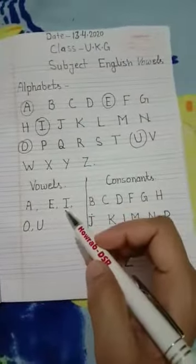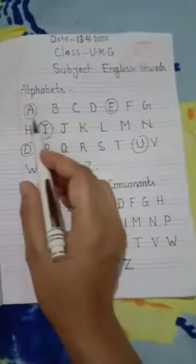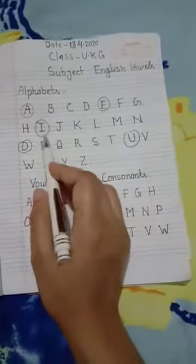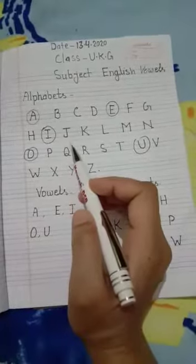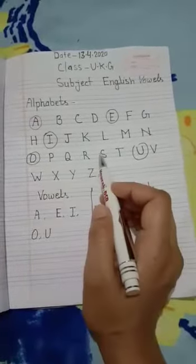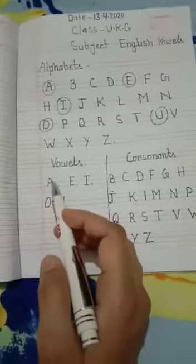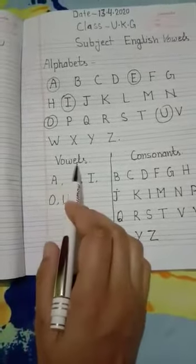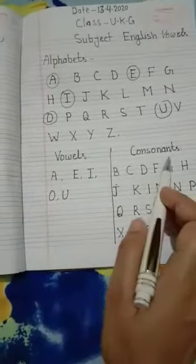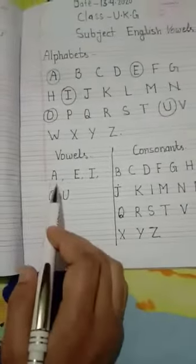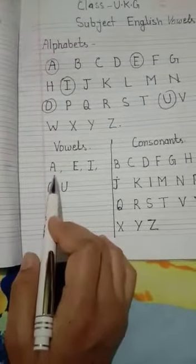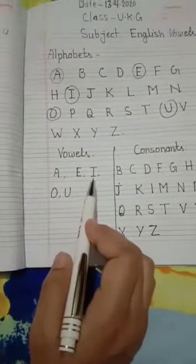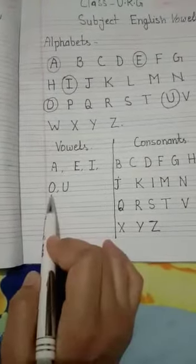Now I will sort out vowels. A, E, I, O, U. There are 5 vowels and 21 letters of consonants. Write here two parts of alphabets. One part vowels and second part consonants. Write here A, E, I, O, U. Speak with us. A, E, I, O, U.